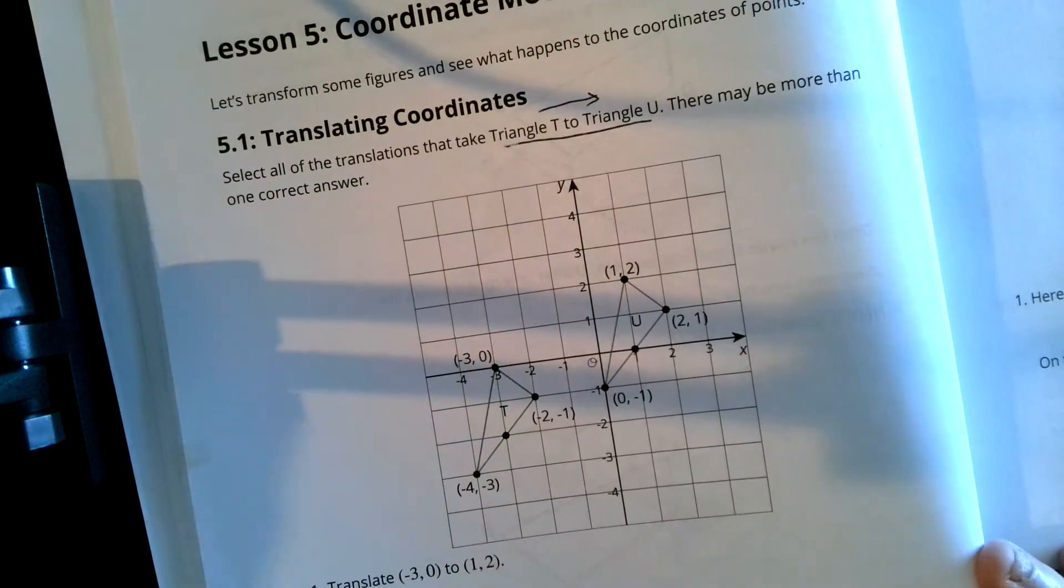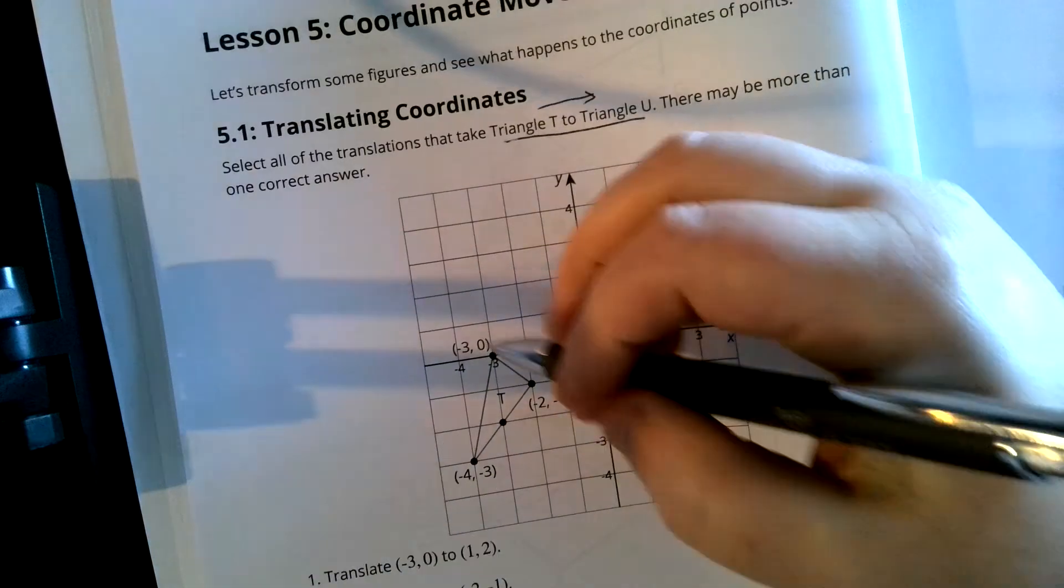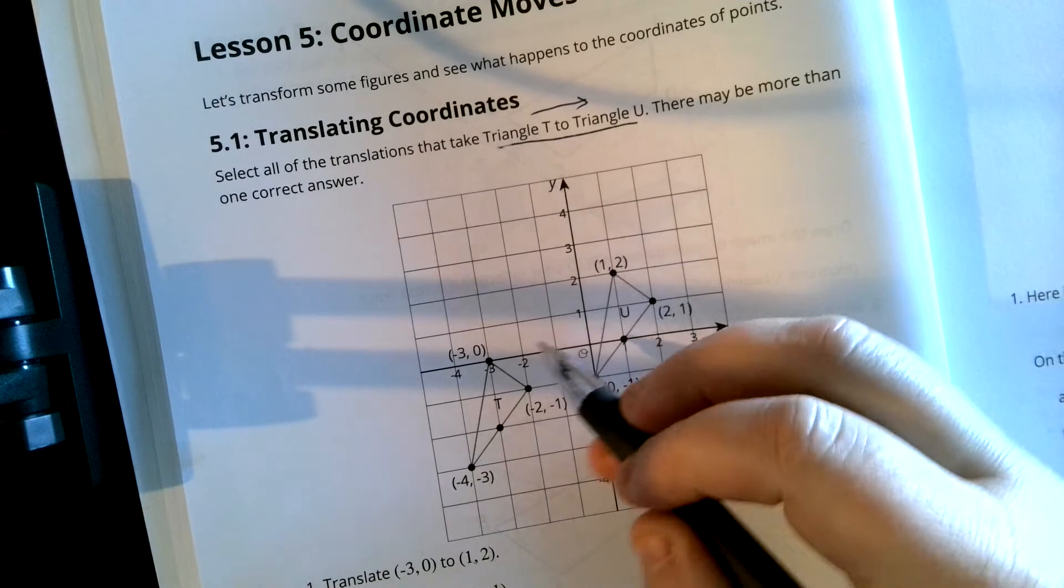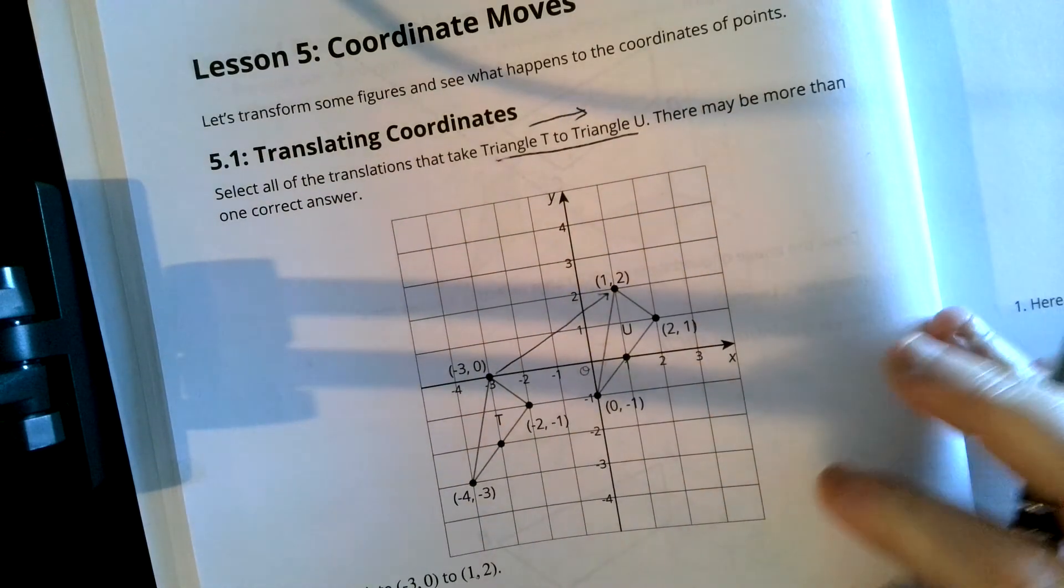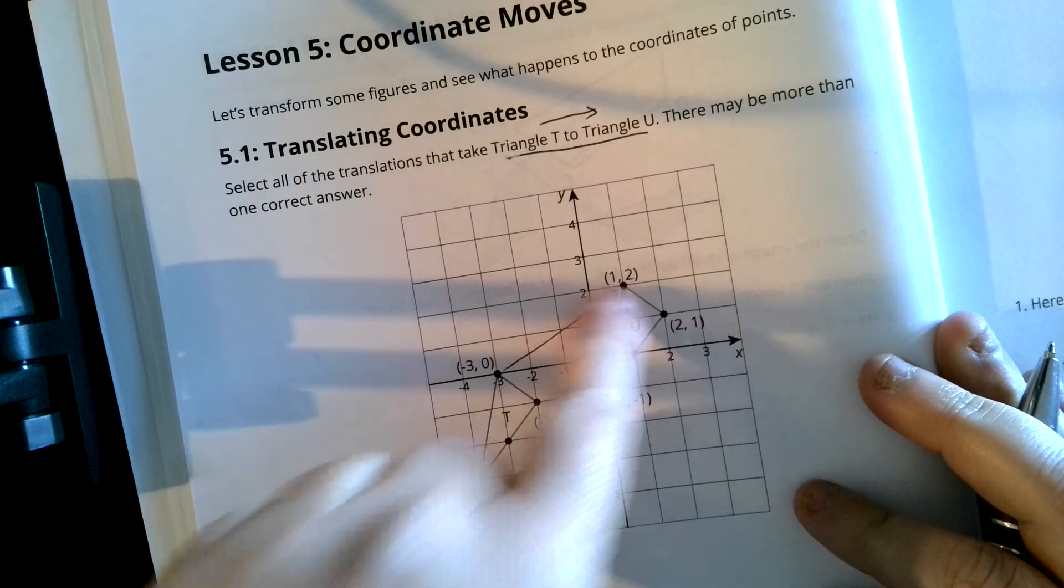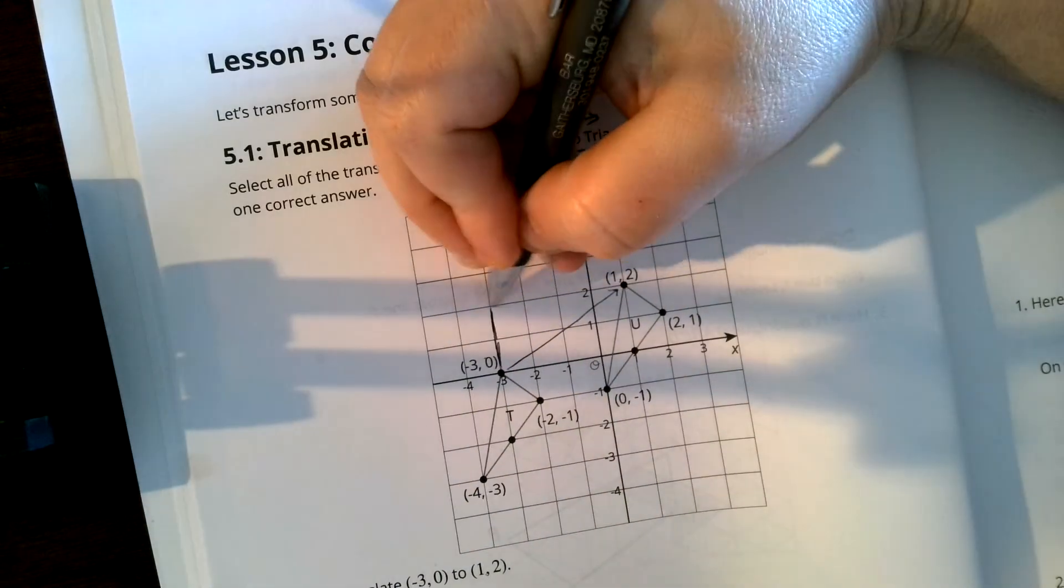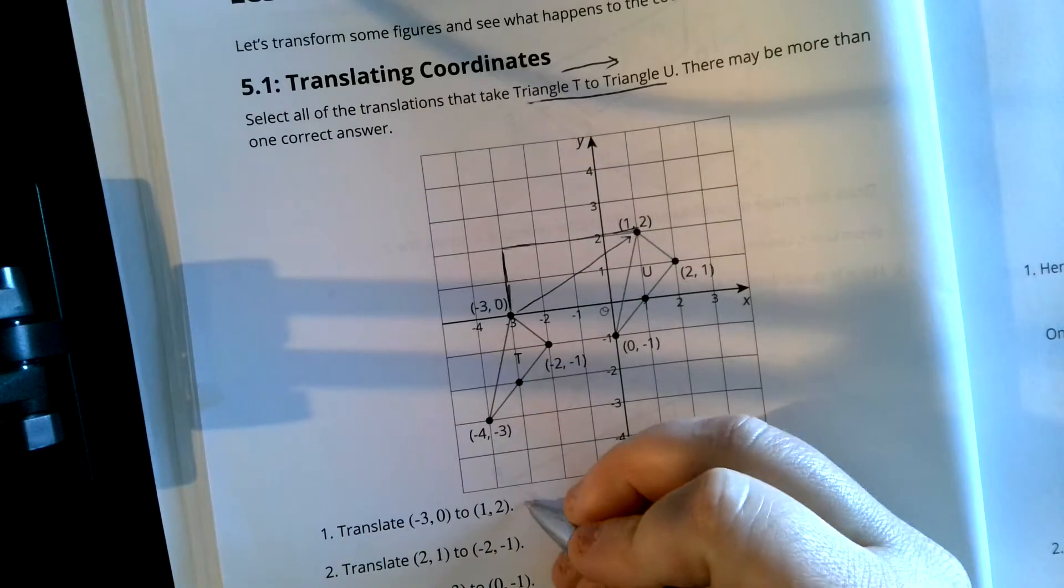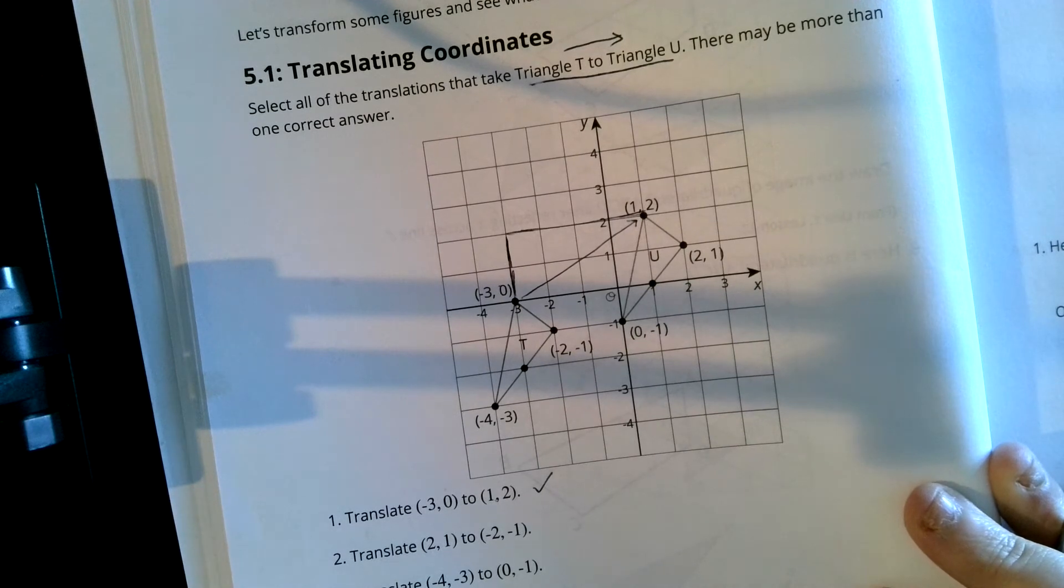That's the specifics there. So the first one is translating (-3, 0), which is right here, to (1, 2), which is here. And if you notice, those are the same exact points on this triangle, it's just sliding up. And if we want to, we can look at it sliding up 2 and over 1, 2, 3, 4. But it is the same point. So this one is absolutely correct. This shows a translation that takes triangle T to triangle U.